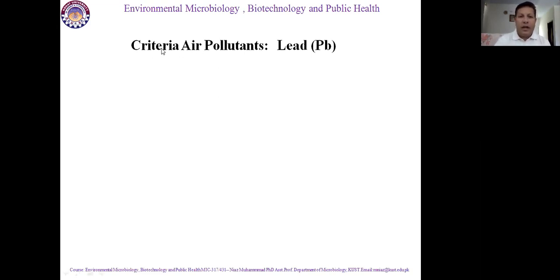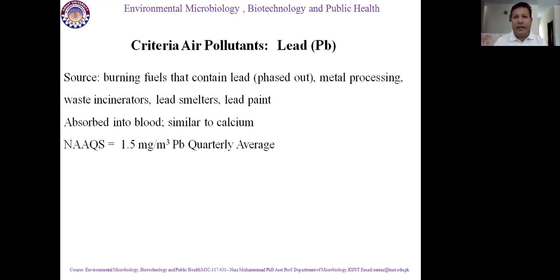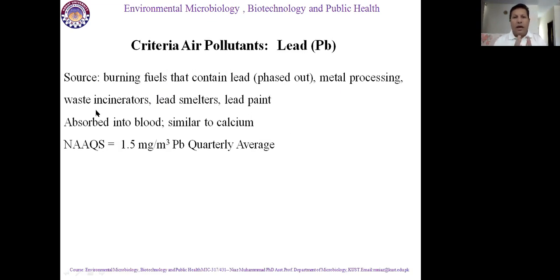Lead is also a toxic element present in our environment. If the concentration of lead increases in the environment, it also negatively affects human health. We will first look at what the sources of lead into the environment are. Lead comes into the air through burning fuel that contains lead, metal processing waste, and incinerators — places where metals are processed — which are also sources of lead emission from the surface to the environment.